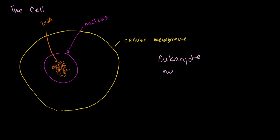Eukaryotes have a nucleus. As I've drawn this cell, it is a eukaryote. If you do not have a nucleus, you are dealing with a prokaryote—no nucleus.